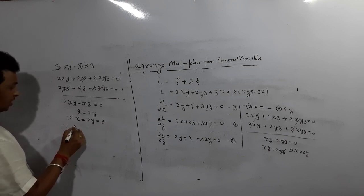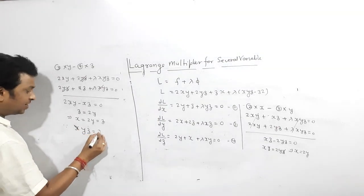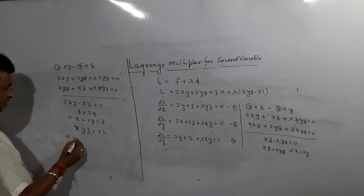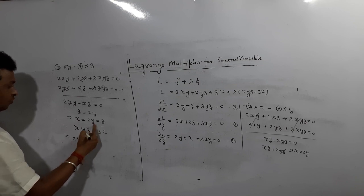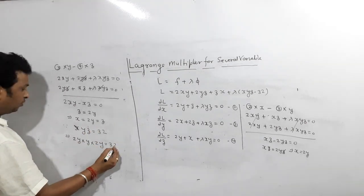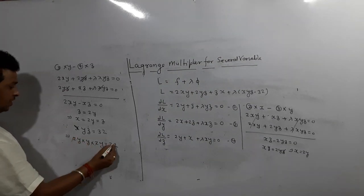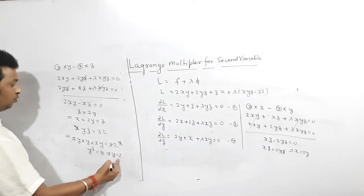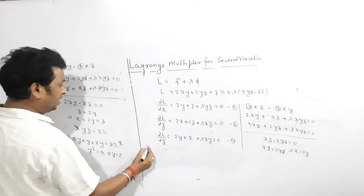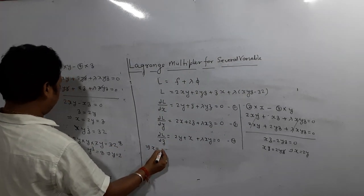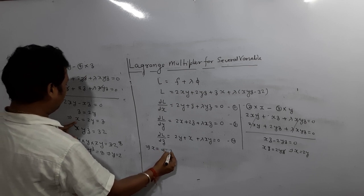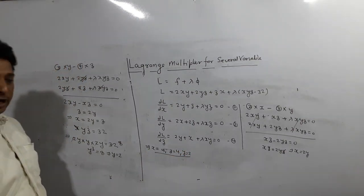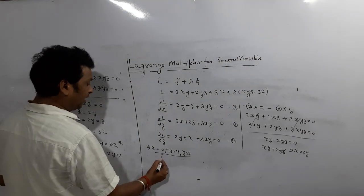Now using the volume condition: xyz = 32. Substituting x = 2y and z = 2y: (2y)(y)(2y) = 32, so 4y³ = 32, giving y = 2. Therefore x = 2y = 4 and z = 2y = 4. Wait — z = 2 is the height of the box. So the dimensions are x = 4, y = 4, z = 2.